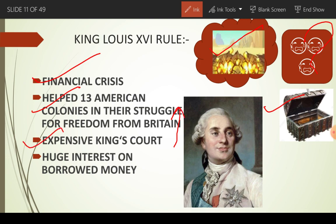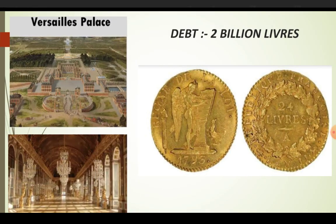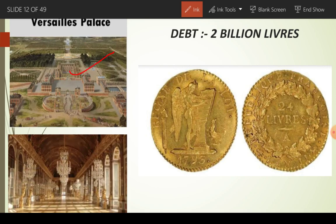Usne Versailles ke naamak ek chhaon mein bahut sundar, bhavya ek mahal banvaaya tha — shehar se door, jungle mein. Jiske andar usne ek king's court bhi banvaaya. Is Versailles ke palace ko maintain karne mein aur is court of king ko maintain karne mein bahut sara paisa kharch ho jata tha, kyunki iske andar bahut saari mirrors aur precious stones ka use kiya gaya tha. France ne jis jis se paise borrow kiye the, unki rate of interest bhi high thi.